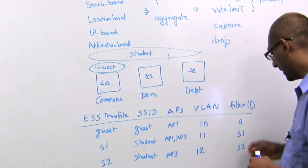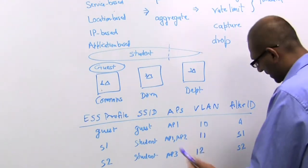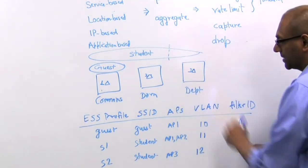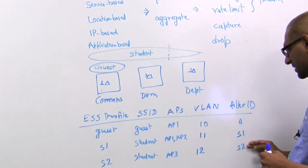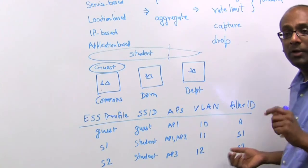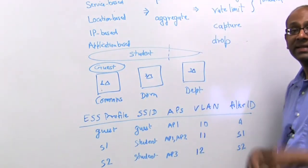So for example, you might have user U1 and U2 both connecting to the student SSID in the department, but user U1 just gets the standard filter ID S2, while user U2, based on RADIUS specifications, might get a different filter ID S3.